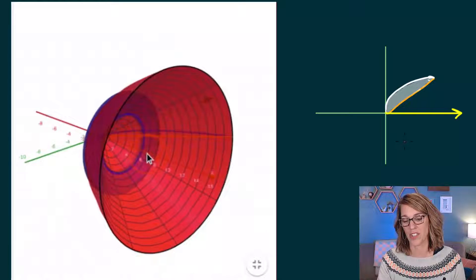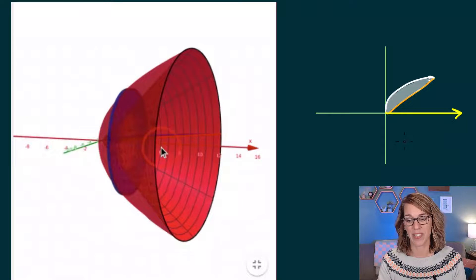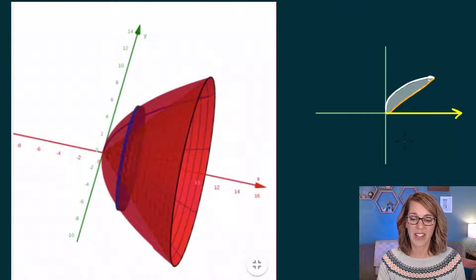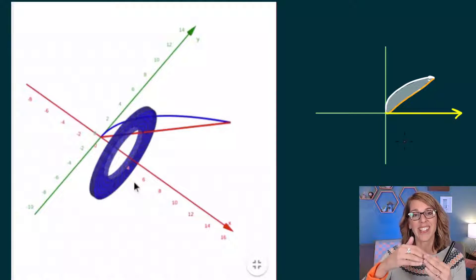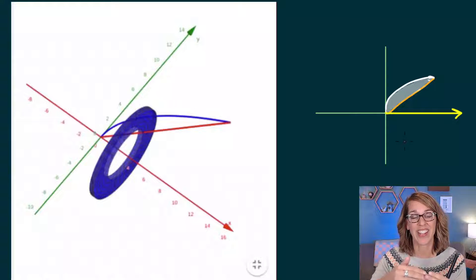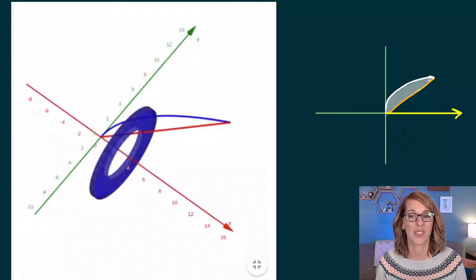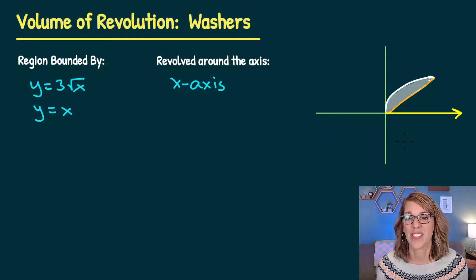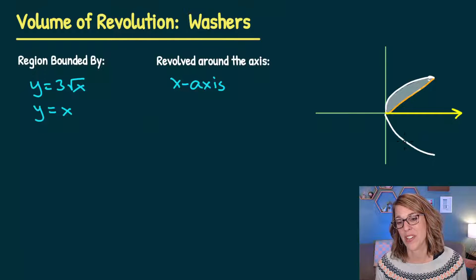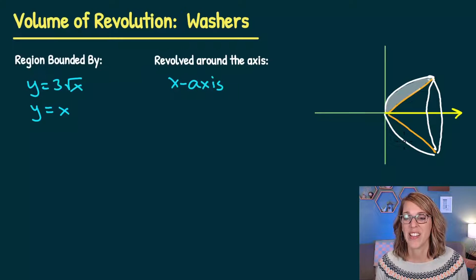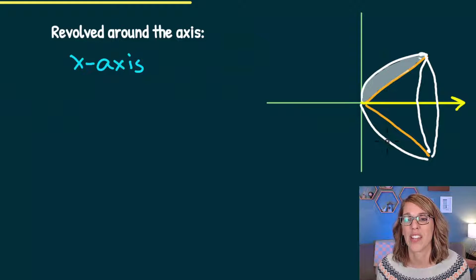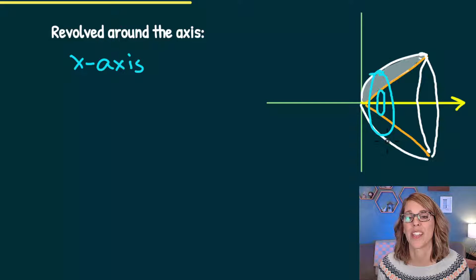You can just barely see that blue washer in there. That blue washer has an open space in the middle and some thickness. If I get rid of my surface, I can show you just what that washer looks like. You can see how the outer edge lines up with the curve and the inner edge lines up with the line y equals x. I'm drawing a mirror image on the other side of my axis of revolution, and these washers are going to have an opening in the middle and be closed on the outside.